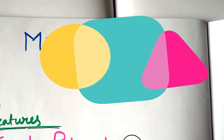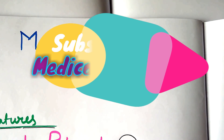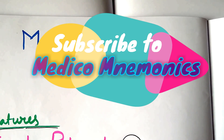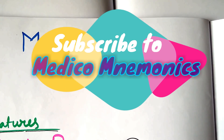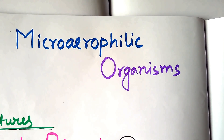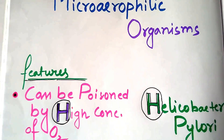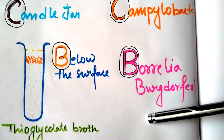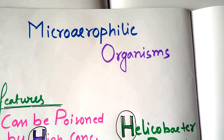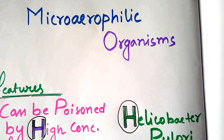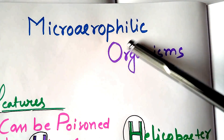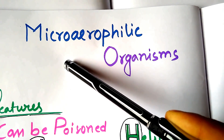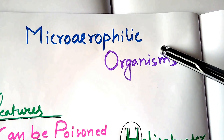Hello and welcome back friends. Today we have a microbiology pneumonia that is about microaerophilic organisms. We will know the features of the microaerophilic organisms and side by side will be knowing all the names of microaerophilic organisms. By the name you can say that they like a micro amount of air.